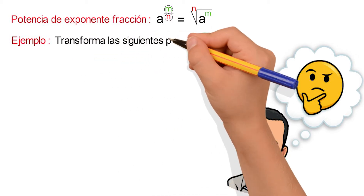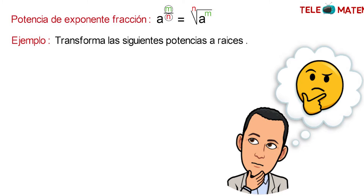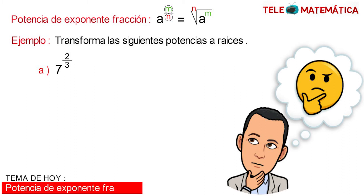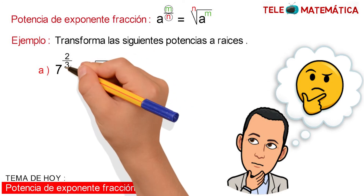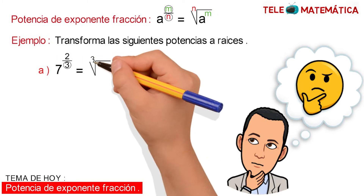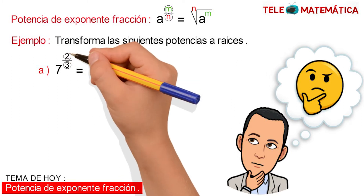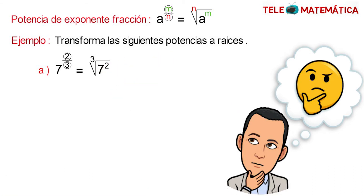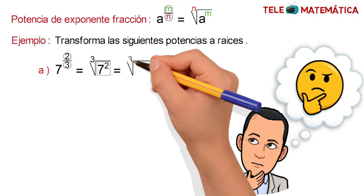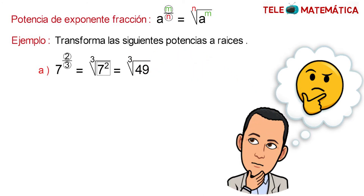Transform the following powers to roots. Literal A: 7 raised to the fraction 2/3. Now, applying the property, this would be equal to the root where the denominator 3 becomes the index of the radical and the numerator 2 becomes the exponent. Then solving the power, this would be equal to the cube root of 49, and this would be the result.